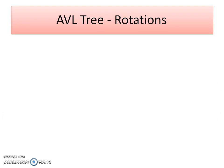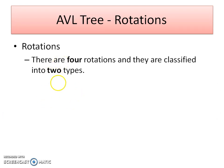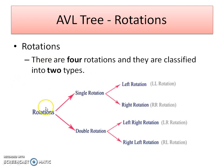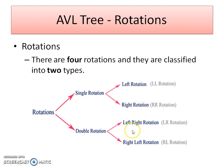Before that, we must know what the different types of rotations are. Basically, there are four rotations and they are classified into two types. The first type is single rotation and the second type is double rotation. In single rotation, there are two separate rotations: left rotation and right rotation. In double rotation, there are again two types: left-right rotation and right-left rotation.